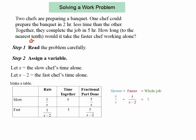We want to write down to the nearest tenth. After reading the question, we want to assign variables. So in this case, we can let x be the slow chef's time alone. That's how long it would take for the slow chef to complete the job. So the fast chef's time would be x minus two. This works two hours faster.